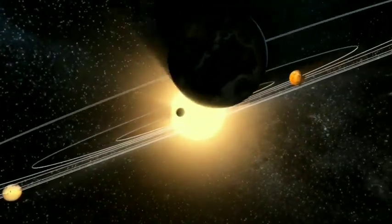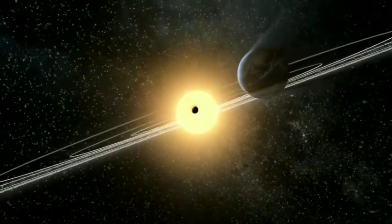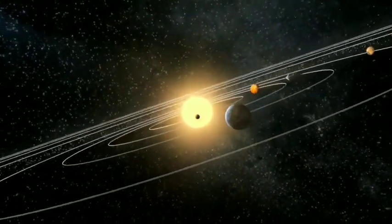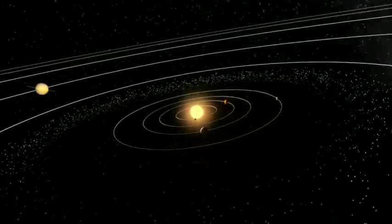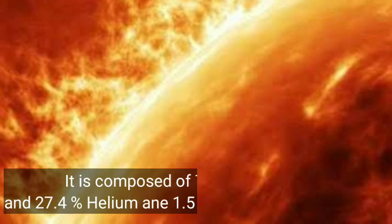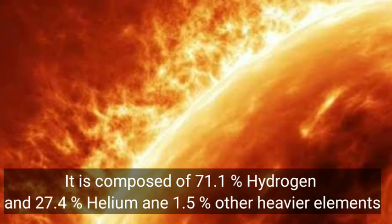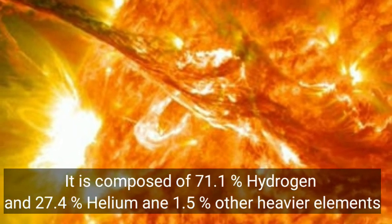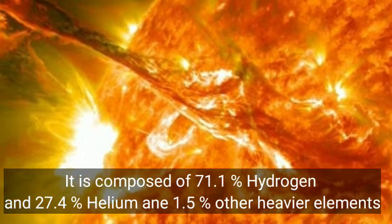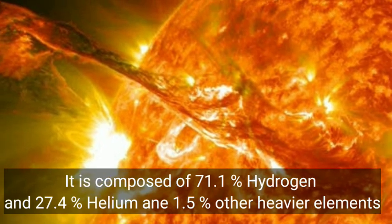The Sun is the star at the center of the solar system and main source of heat and light. It's composed of 71.1 percent hydrogen, 27.4 percent helium, and 1.5 percent other heavy elements.